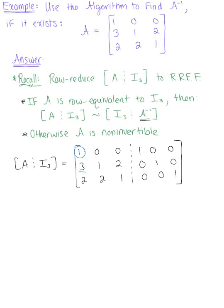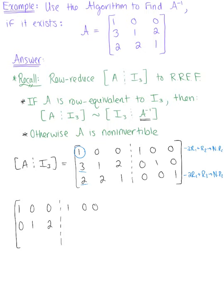Starting with our first pivot, we eliminate the entries below it. We do −3 times row 1 plus row 2 to get a new row 2, and −2 times row 1 plus row 3 to get a new row 3. Row 1 stays the same: 1, 0, 0, 1, 0, 0. Row 2 becomes: 0, 1, 2, −3, 1, 0. Row 3 becomes: 0, 2, 1, −2, 0, 1.